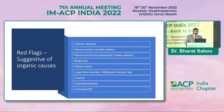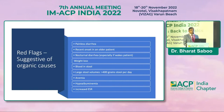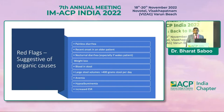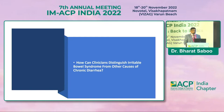Red flag symptoms include painless diarrhea, recent onset of diarrhea in an older patient, nocturnal diarrhea especially if it wakes the patient, weight loss, blood in the stool, large stool volume over 400 grams, anemia, hypoalbuminemia, and elevated ESR. These red flag signs warrant immediate investigation and should not be ignored.